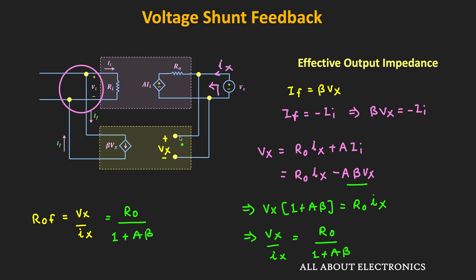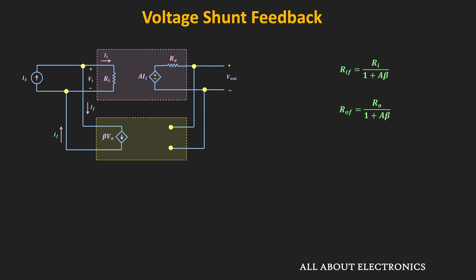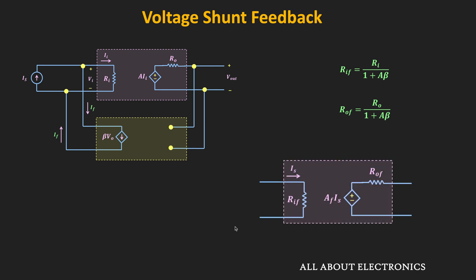As you can see, because of the shunt connection, the effective output impedance of this feedback amplifier reduces by the factor of (1 plus Aβ). Because of the shunt connection both on the input and output side, both impedances reduce. This is how the equivalent circuit of the feedback amplifier will look — where RIF is the effective input impedance, ROF is the effective output impedance, and AF is the closed-loop gain of the feedback amplifier.